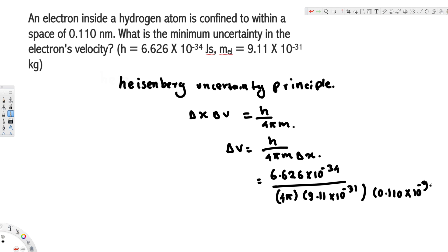That's going to be the minimum uncertainty in the electron's velocity. I hope this helps, thanks!